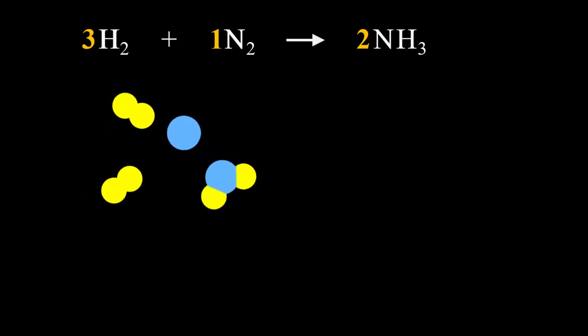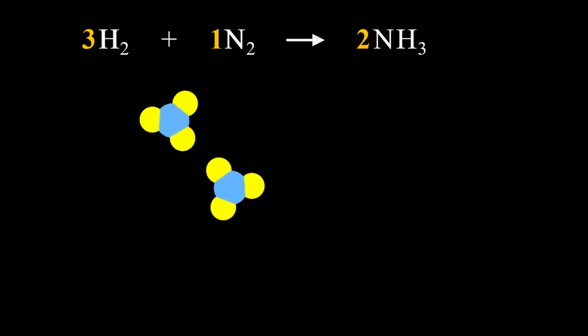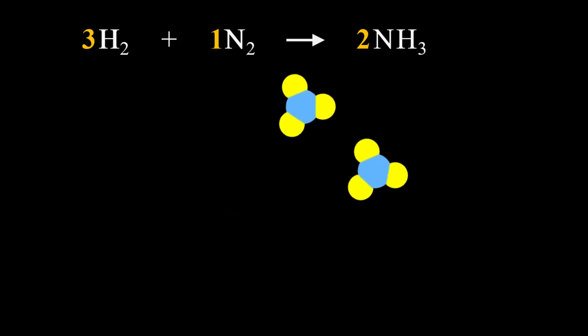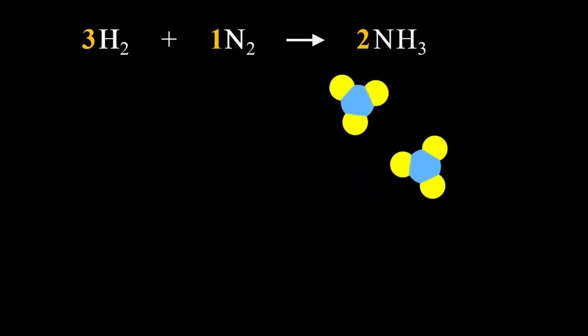This is what the arrow represents, the reactants becoming products. And that produces 2 ammonias, NH3. The ratio is 3 to 1 to 2 in this reaction given by the coefficients.